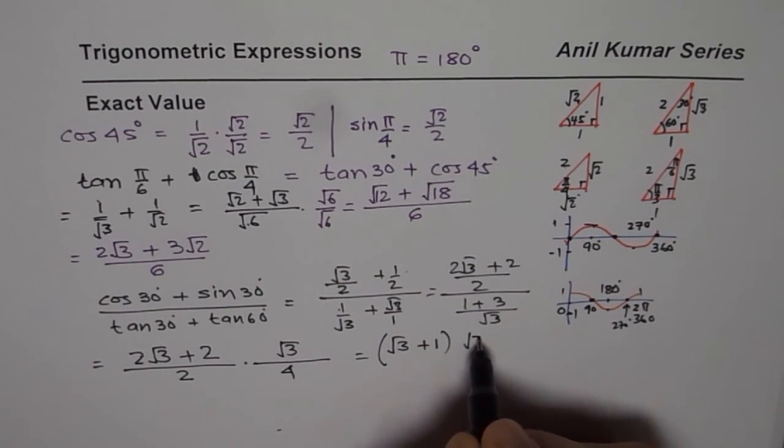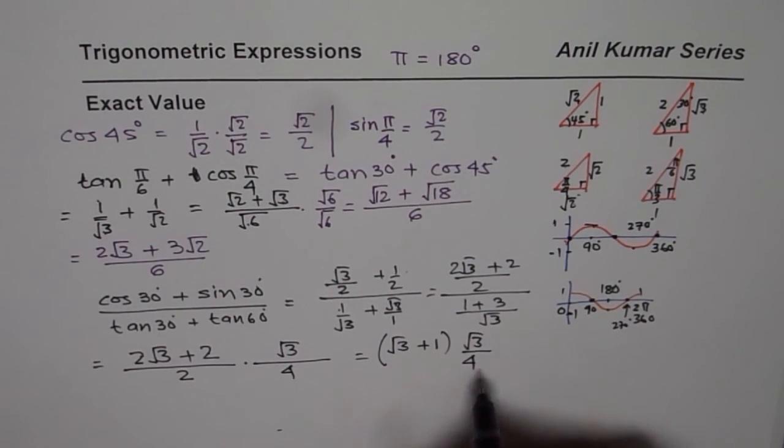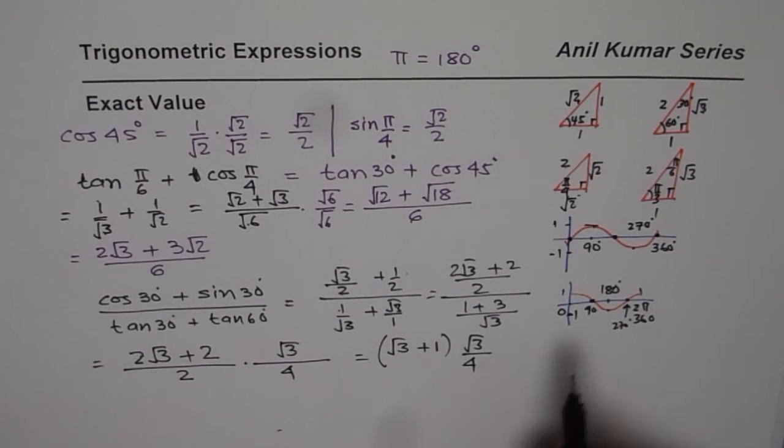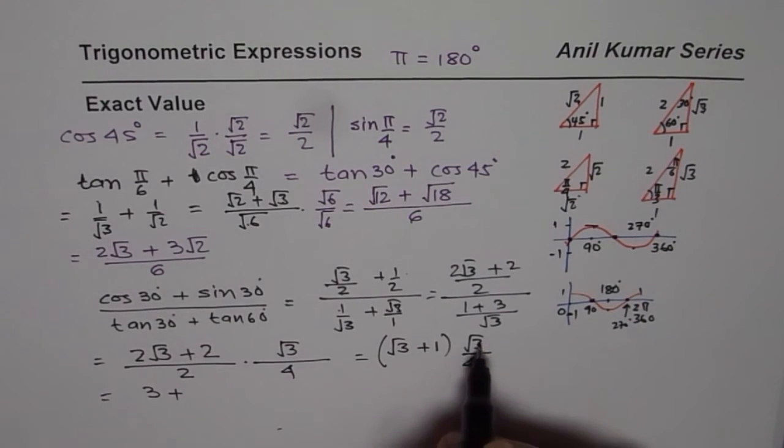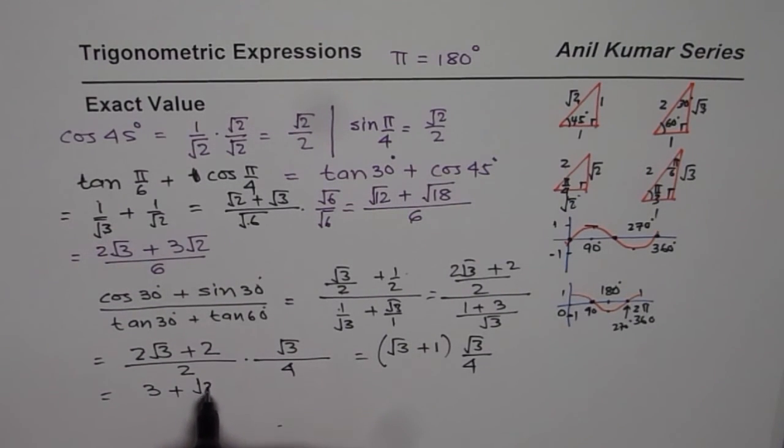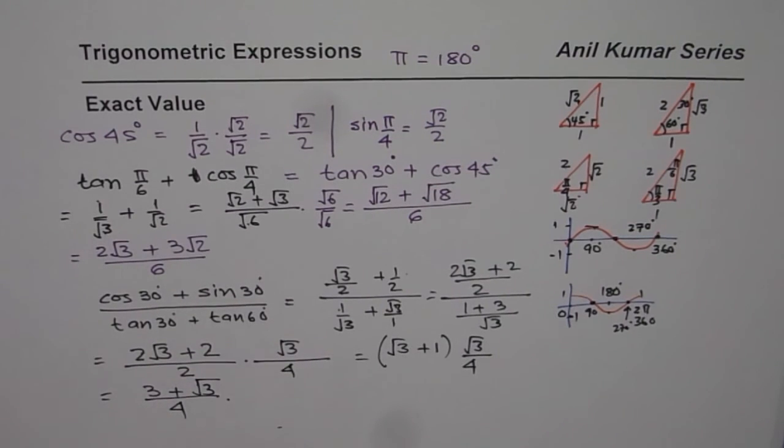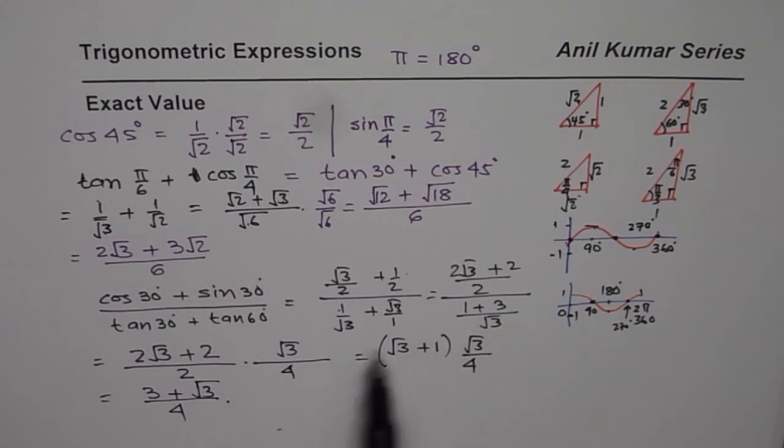Now, we can simplify it. You could have simplified dividing both by 2. So, you get here square root 3 plus 1, times square root 3 over 4, which you can further multiply. And then, square root 3 times square root 3 is 3 plus square root 3 times 1 is square root 3 divided by 4. So, at times, you may land up in doing all these calculations, even for simple combination of sines and cosines.